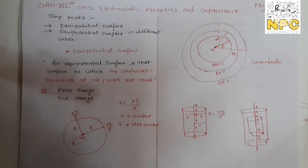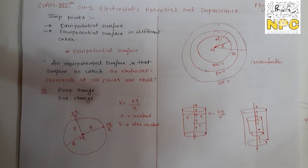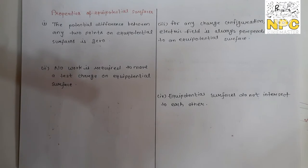I hope these two examples are clear — what an equipotential surface is: a surface where the potential at every point is the same, meaning the potential difference is zero. Now let's discuss the properties of equipotential surfaces. So, first property: